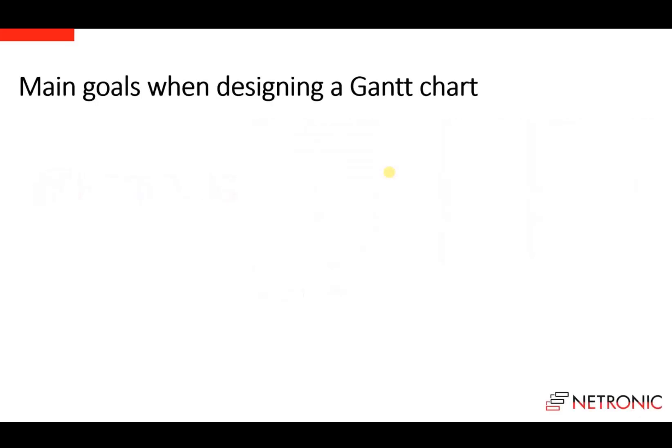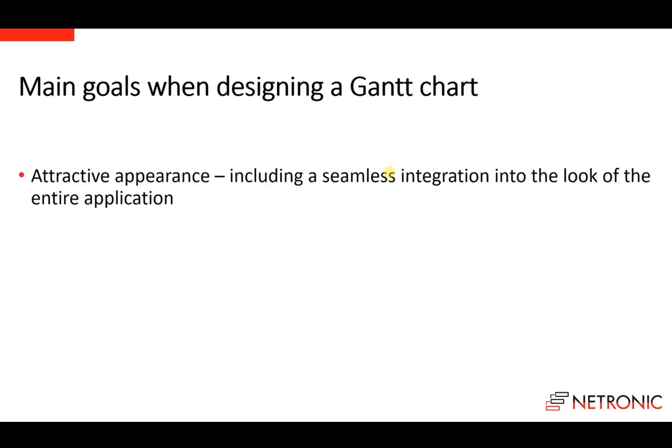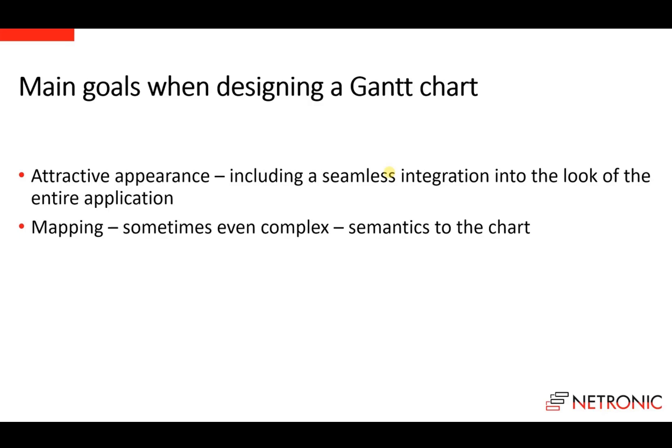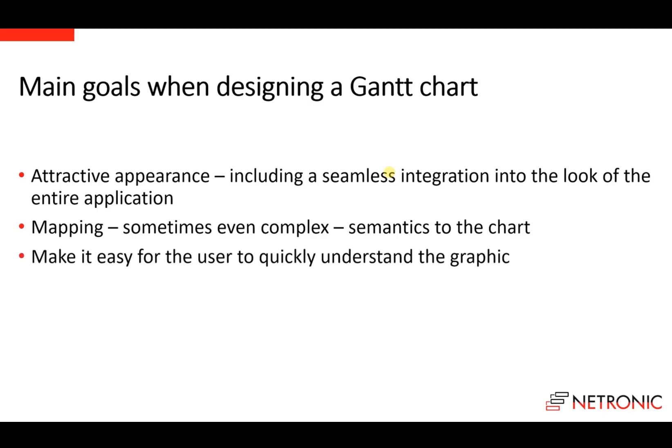When we start designing a web application using a Gantt chart, we have several goals. One goal is to have an attractive appearance, which includes a seamless integration of the Gantt chart into the look of the entire application. Another goal is to map semantics to the chart — sometimes even complex semantics — and at the end, we want to make it easy for the user to quickly understand the graphic. The question is: how can the design of the bars support us in reaching these goals?